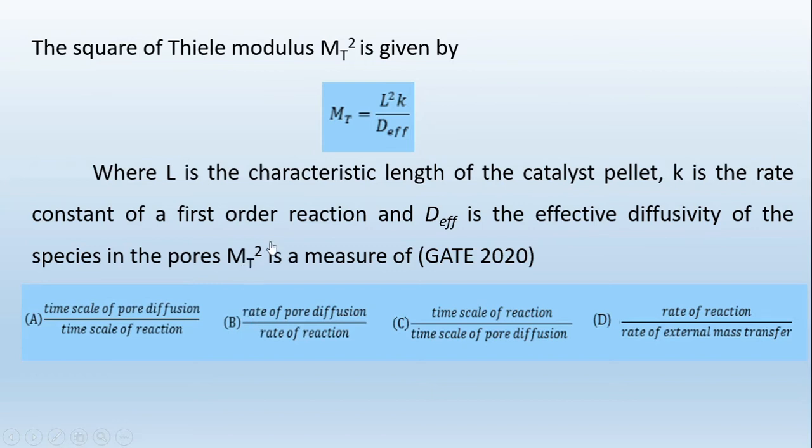Let us rearrange the given equation to know what is the significance of Thiele modulus. You can write this equation as k divided by (D_effective divided by L^2). I can write the mass transfer coefficient k_g as D_eff divided by L.